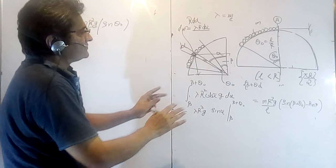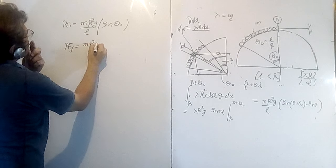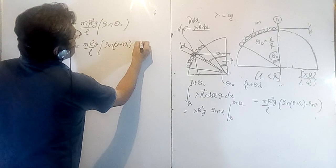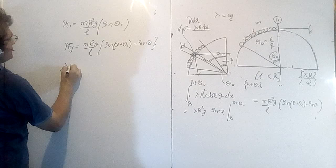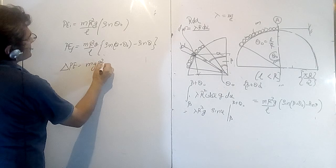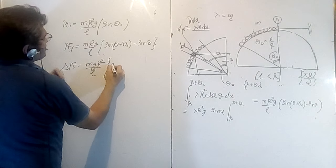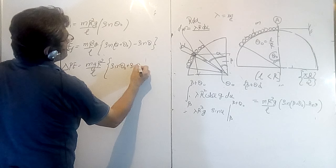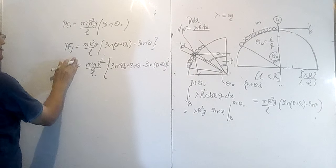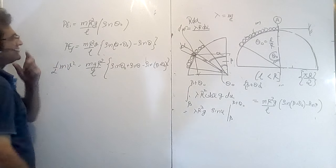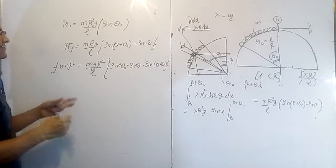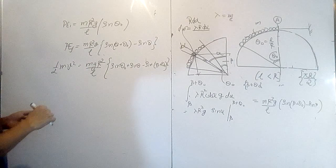The final potential energy at angle theta is (MR²G/L) · [sin(theta + theta_0) − sin(theta)]. The fall in potential energy equals the initial PE minus the final PE, which equals (MR²G/L) · [sin(theta_0) − sin(theta + theta_0) + sin(theta)]. This fall in potential energy equals (1/2)MV², where V is the velocity at angle theta. M cancels from both sides.